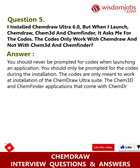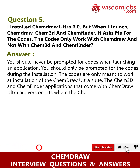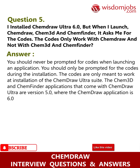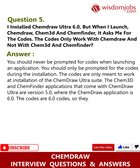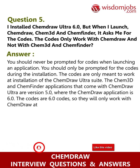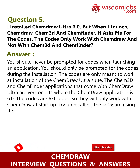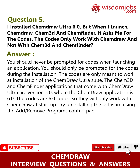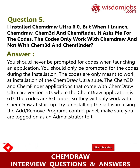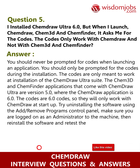The codes are only meant to work with the Chem3D and ChemFinder applications that come with ChemDraw Ultra, which are version 5.0, while the ChemDraw application is version 6.0. The codes are 6.0 codes, so they will only work with ChemDraw at startup. Try uninstalling the software using the Add/Remove Programs control panel. Make sure you are logged on as an administrator to the machine, then reinstall the software.